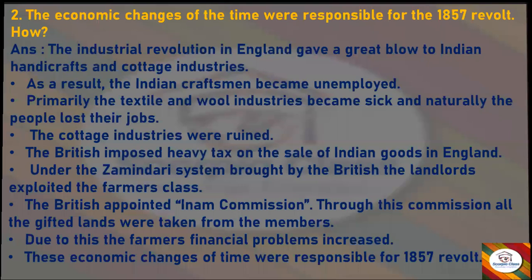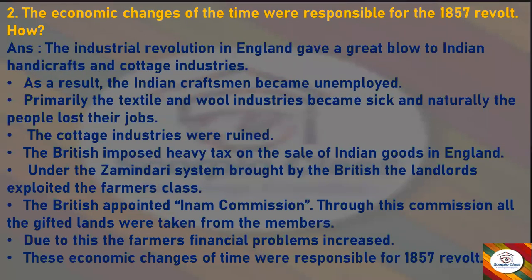Next question: The economic changes of the time were responsible for the 1857 revolt — how? Answer: The Industrial Revolution in England gave a great blow to Indian handicrafts and cottage industries. As a result, Indian craftsmen became unemployed. Primarily the textile and wool industries became sick and naturally the people lost their jobs. The cottage industries were ruined, and the British imposed heavy tax on the sale of Indian goods in England.